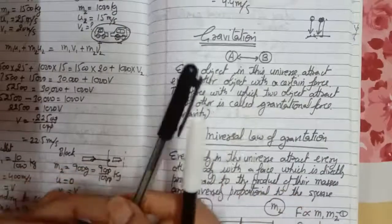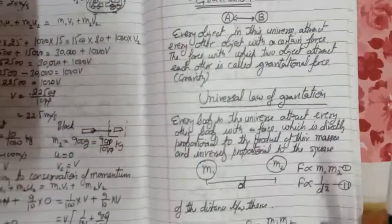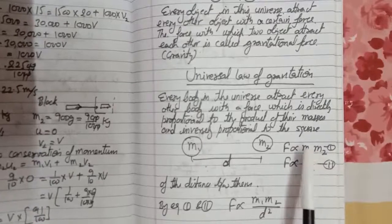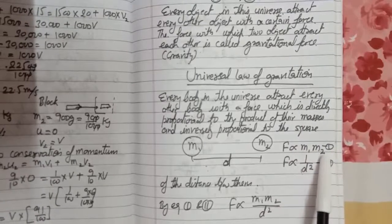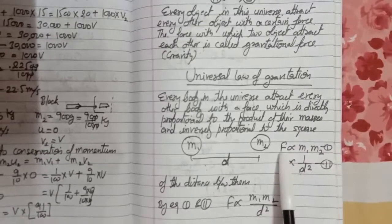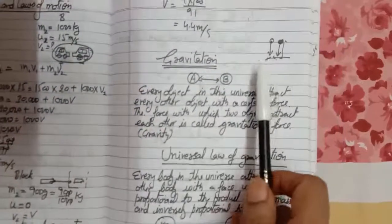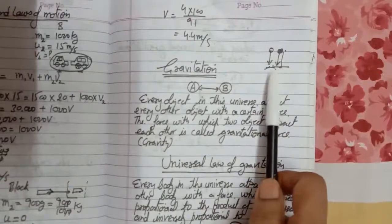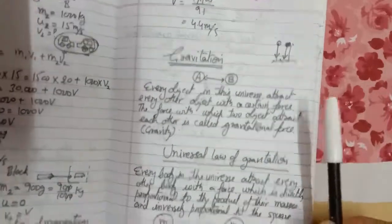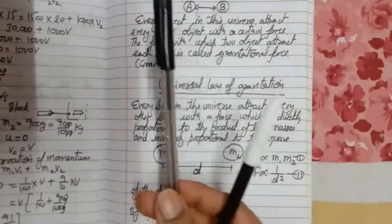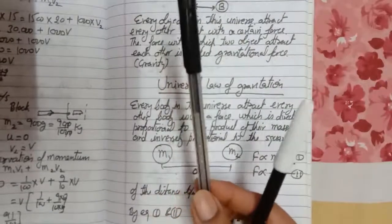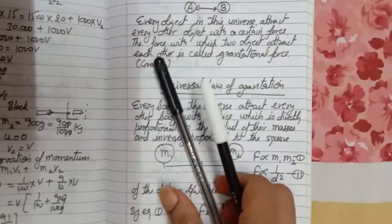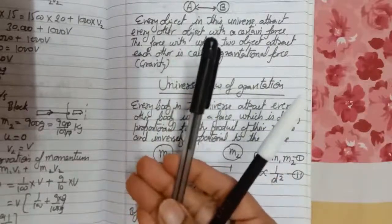This force which acts between two objects is directly proportional to the product of their masses. That is, if we increase the mass of the bodies, the force will also increase. That's why we are able to see the attraction force between the earth and the object, since the earth has a very huge mass. But these two pins have very little mass, so we are not able to see the attraction force between them.